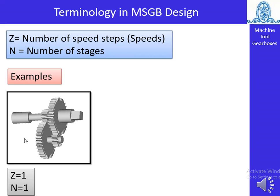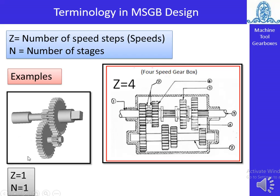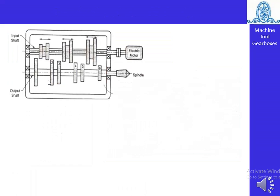Now, the terminology used in multi-speed gearbox design: Z indicates the number of speed steps, and N (capital) is the number of stages. For example, if Z equals one and N equals one, there is only one stage and one speed step. In another example where Z equals four, we get four different speed steps — there are four gears at the input shaft and four gears at the output shaft.